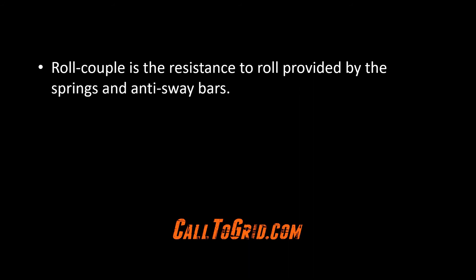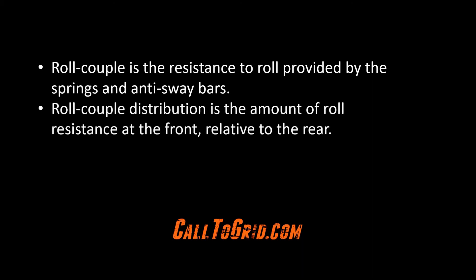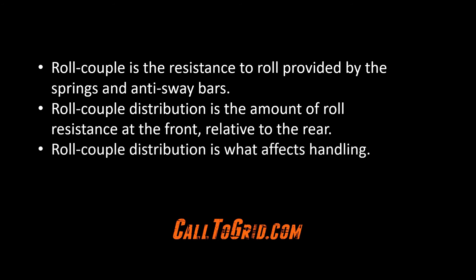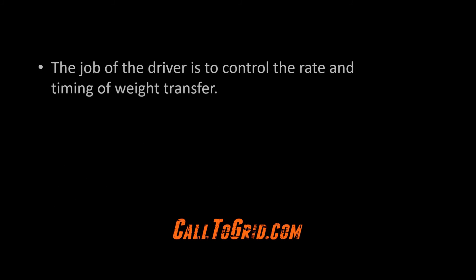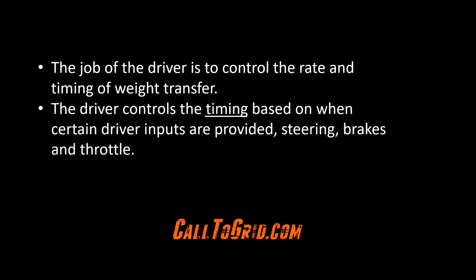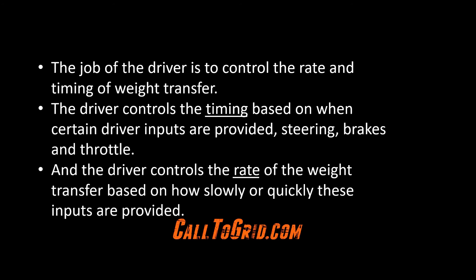Roll couple is the resistance to roll provided by the springs and anti-sway bars. Roll couple distribution is the amount of roll resistance at the front relative to the rear. Roll couple distribution is what affects handling and determines where the weight is transferred during cornering. The job of the driver is to control the rate and timing of weight transfer — the driver controls timing based on driver inputs of steering, brake, and throttle, and controls the rate based on how slowly or quickly these inputs are provided.